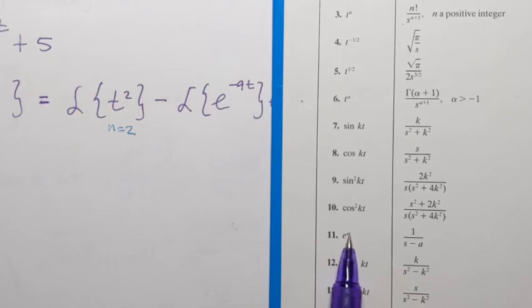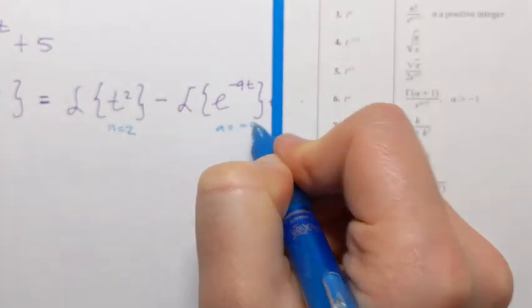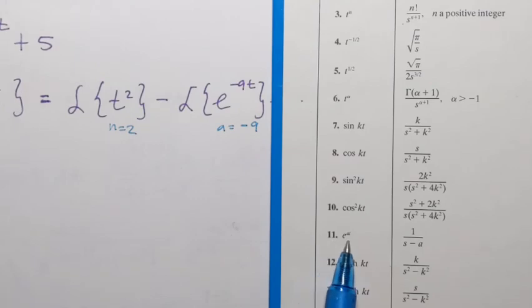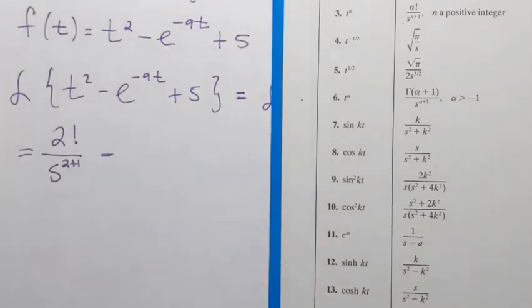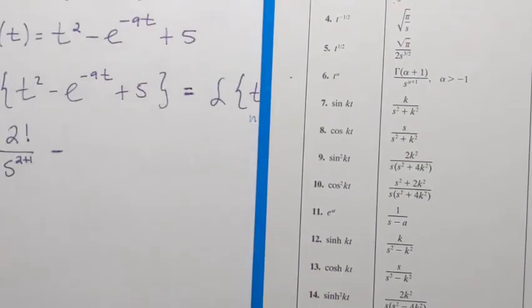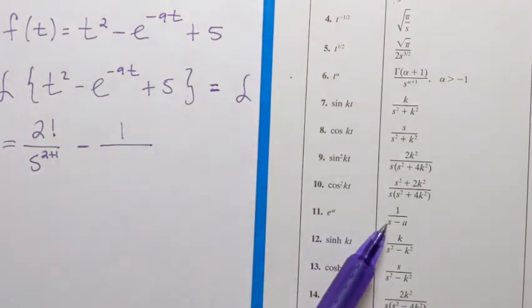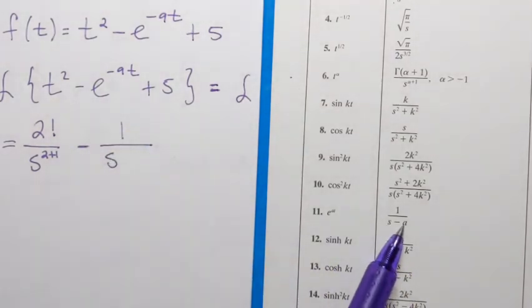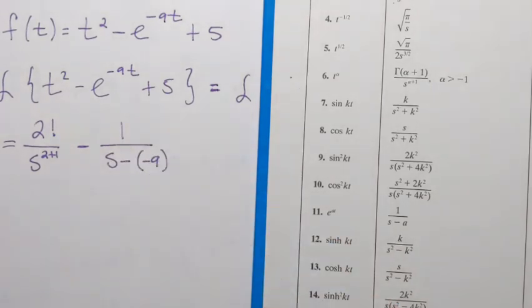So in my case, a is the number negative 9. So a is the coefficient of t, and that's negative 9. Well, according to the table, the Laplace transform of this kind of function will be 1 over s minus a. Let me write that down. Minus, well, minus because from here I'm subtracting, right? So minus, and then 1 over s, and then a again is negative 9. So it's minus, and then a is negative 9. So like that, minus negative 9.